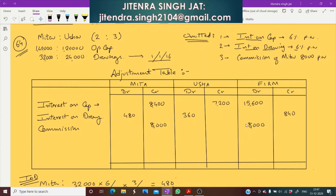Now let us total the amounts. On the credit side of the firm: 15,600 + 8,000 = 23,600. Subtracting the interest on drawings of 840, the net credit balance remaining for the firm is 23,600 − 840 = 22,760. This represents profit that was wrongly credited to the firm.